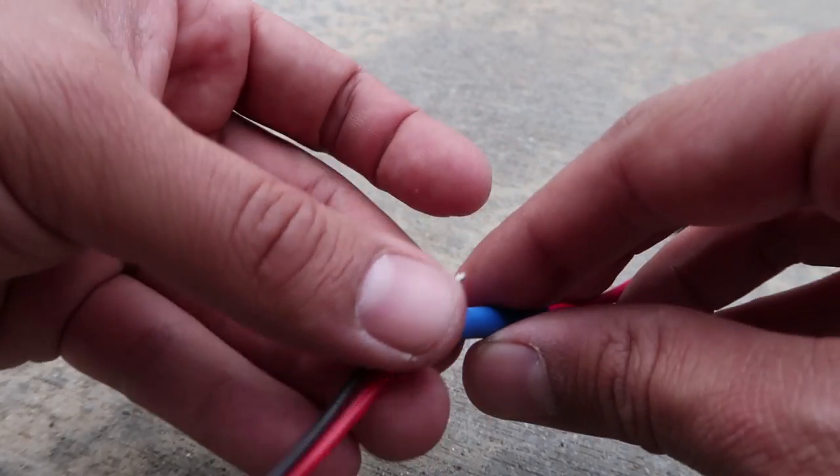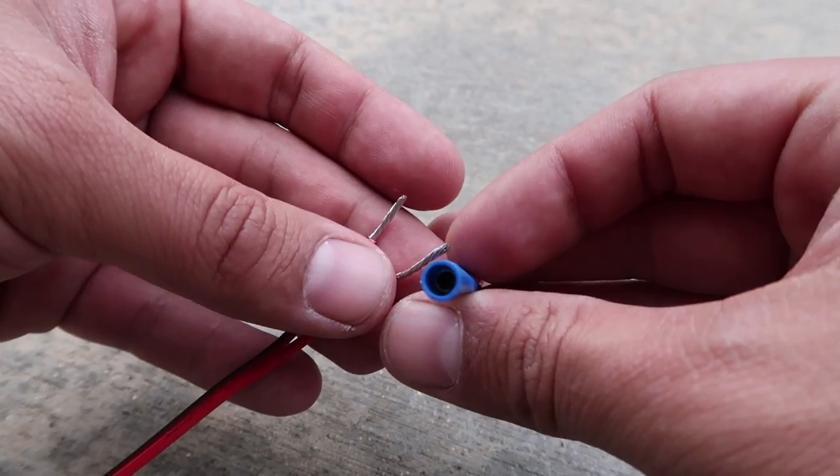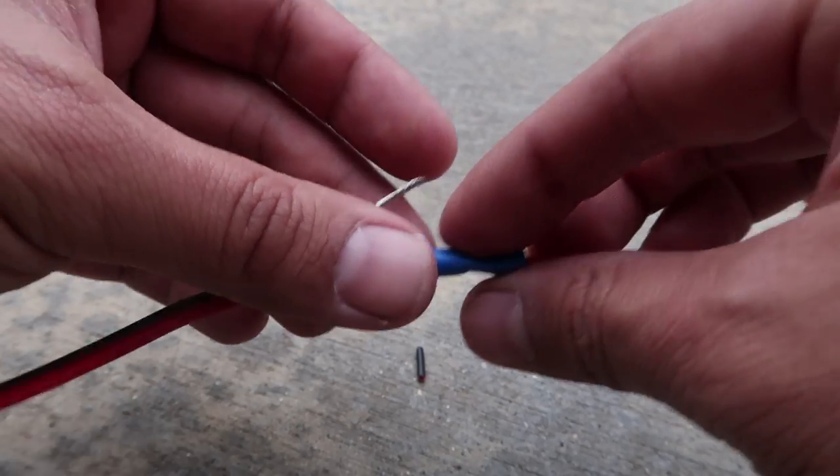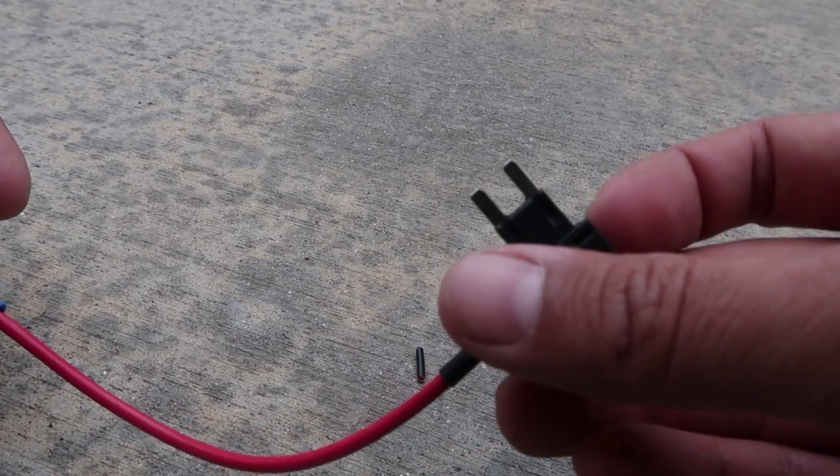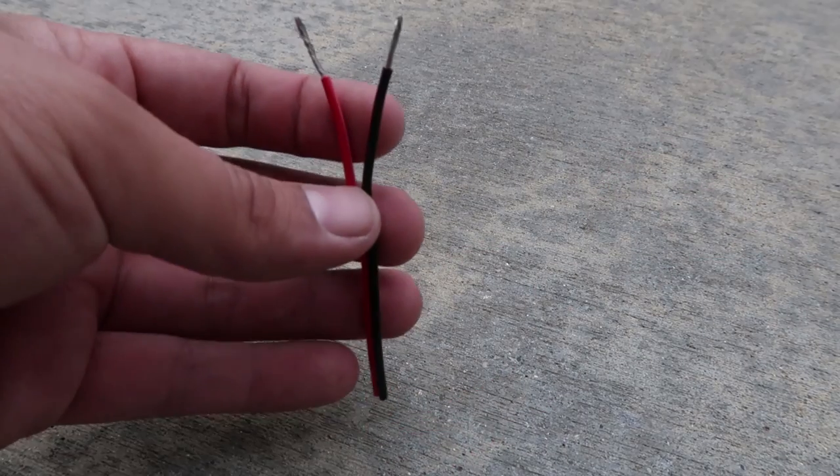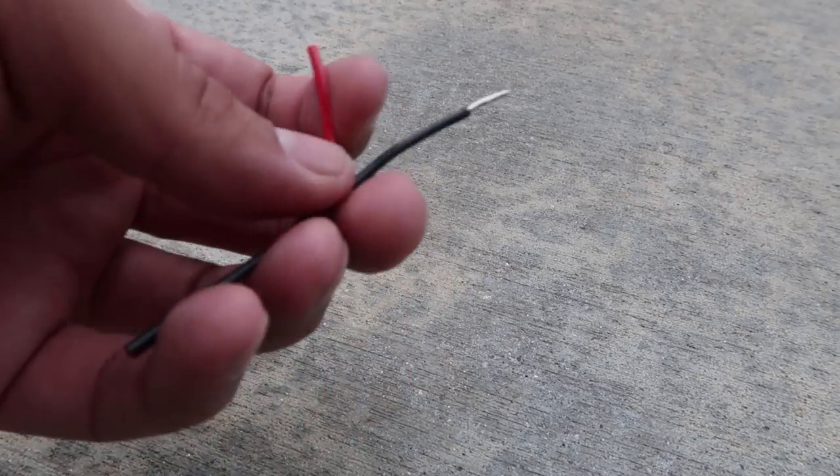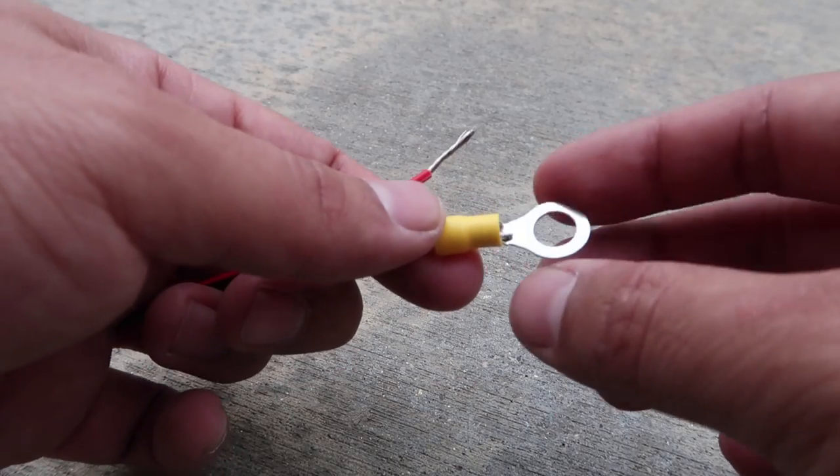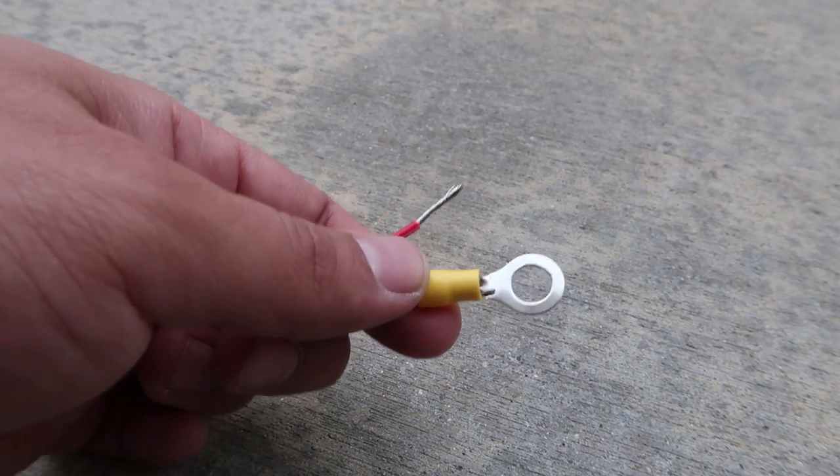So now on the inside of this wire connector is some more connecting metal that will allow the two wires to be connected and then this can go to the fuse box. So next the reason for the extra wiring is because these are thicker wires that will allow us to connect to this ring that will connect to the negative terminal of the car.